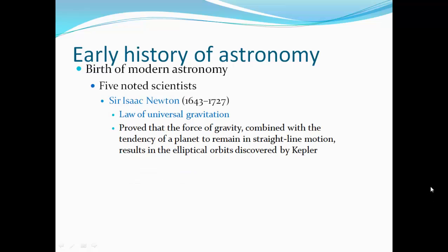Sir Isaac Newton, 1643 to 1727, he developed the law of universal gravitation. He proved that the force of gravity, combined with the inertia of a planet to remain in a straight line of motion, results in elliptical orbits discovered by Kepler.